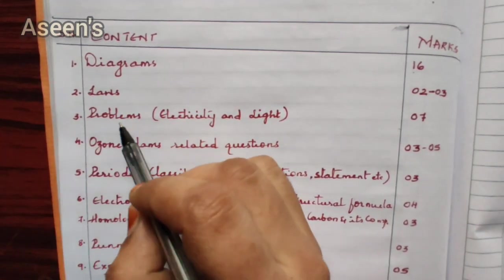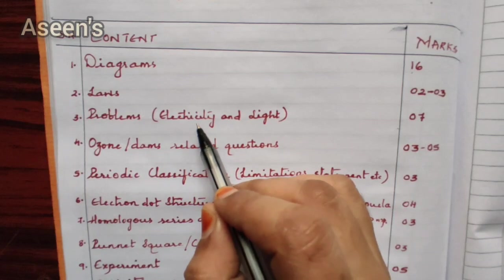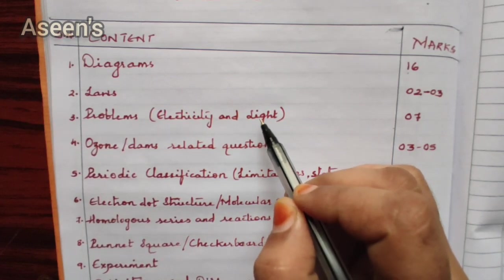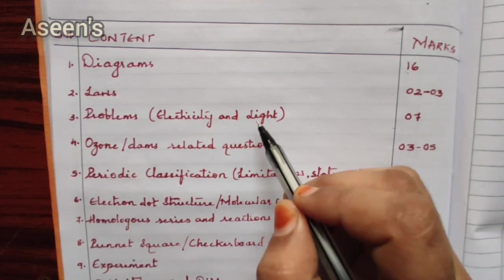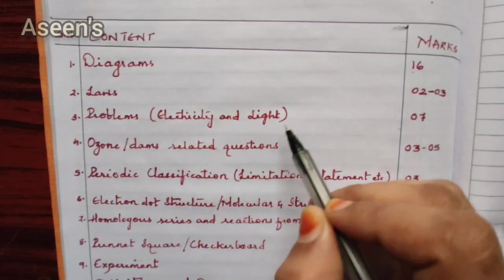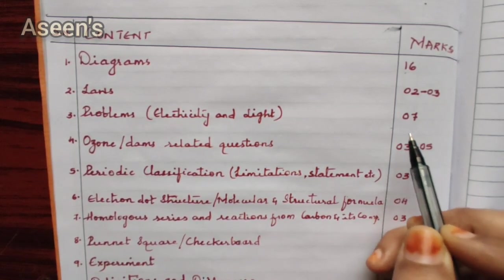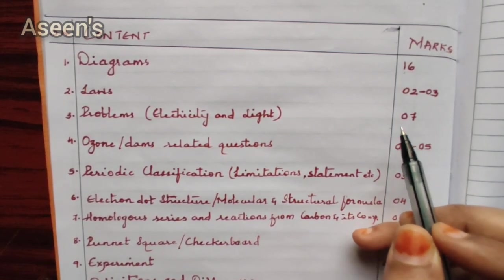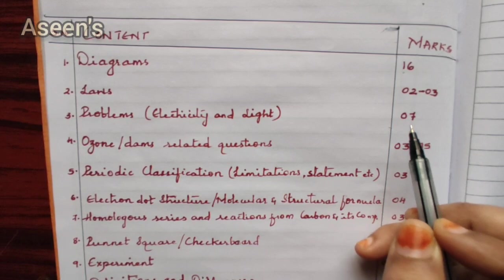Next is problems. As usual in every science paper we have problems, and here we have problems only from electricity and light. For light, it is reduced to only the refraction part — problems from the lens formula and power. Together, all these problems account for seven marks. You can verify this by analyzing both papers — in both, problems total seven marks. This includes both simpler two-mark questions and larger four-mark questions.